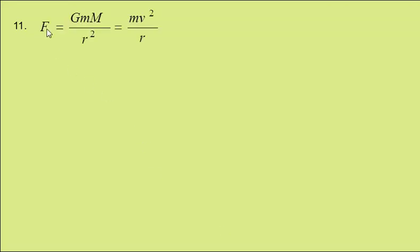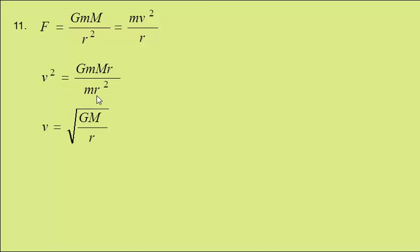The force on the satellite due to the gravitational field is given by this expression, and this is providing the centripetal force on the satellite. Rearranging, we get V squared equal to GM over r. We can then simplify, giving the speed as root GM over r. This is answer B.